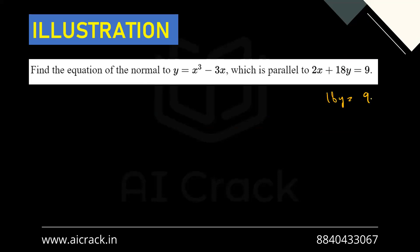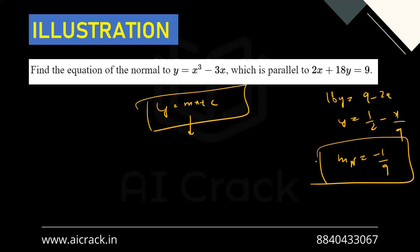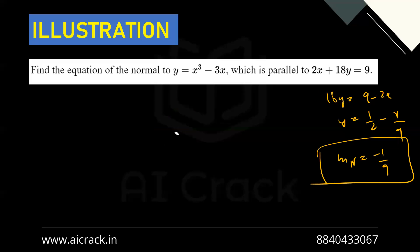Rearranging the line: 18y = 9 - 2x, so y = 1/2 - x/9. Since y = mx + c, m_n = -1/9. In this problem, unlike the previous one, we have m_n and must find the point, rather than having the point and finding the slope.